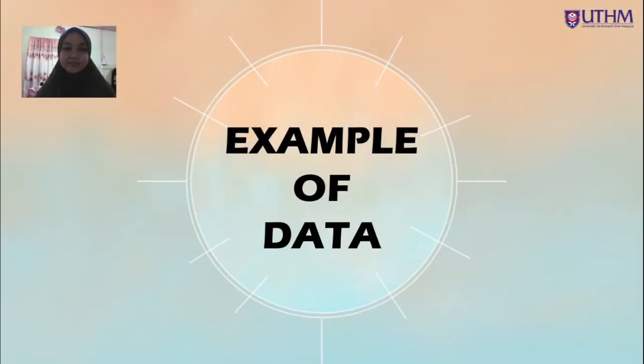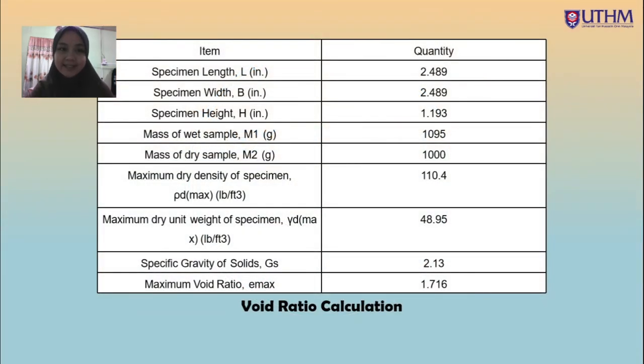I will proceed to the example of data for this direct shear test which is in the table we can see it has two columns which is item and quantity. The first item is specimen length 2.489, specimen width 2.489, specimen height 1.193, mass of wet sample 1095, mass of dry sample 1000 grams, maximum dry density of specimen 110.4, maximum dry unit weight of specimen 48.95, specific gravity of solid 2.13, and the last one is maximum void ratio 1.716.